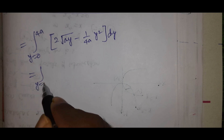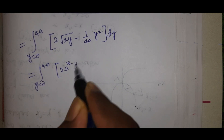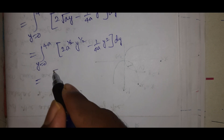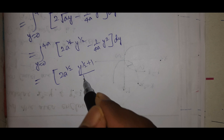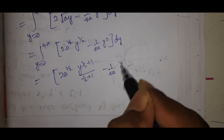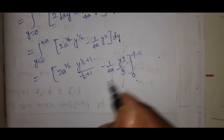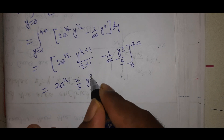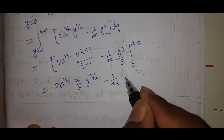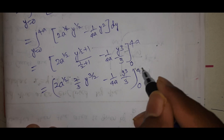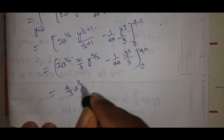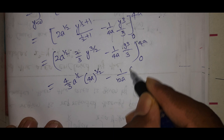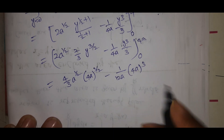That equals the integral from y=0 to 4a of [2a^(1/2)·y^(1/2) − (1/4a)·y²] dy. Evaluating: [2a^(1/2)·(2/3)·y^(3/2) − (1/4a)·(y³/3)] from 0 to 4a. Applying the upper limit: (4/3)·a^(1/2)·(4a)^(3/2) − (1/12a)·(4a)³. The lower limit gives zero.